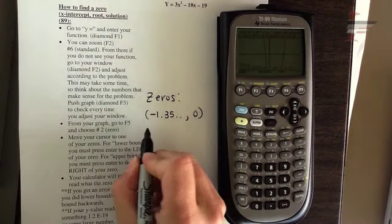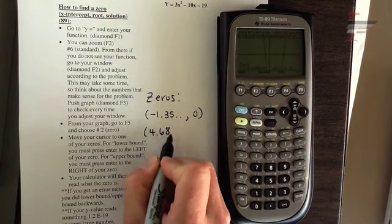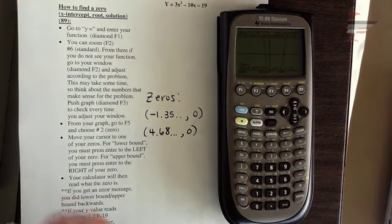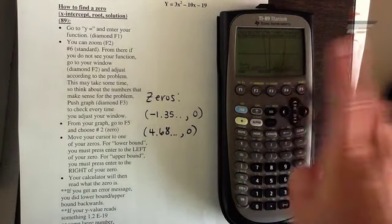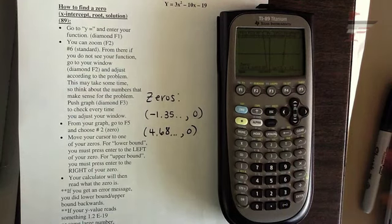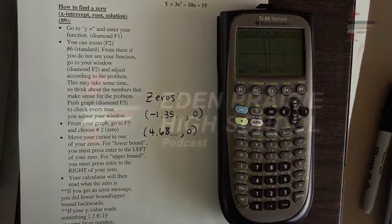And that zero is at 4.685, et cetera, comma zero. And here's a great example. Notice mine says 2e to the negative 12. Yours might not say exactly what mine says, but that's essentially zero. And that's totally fine. And that's how you calculate a zero.